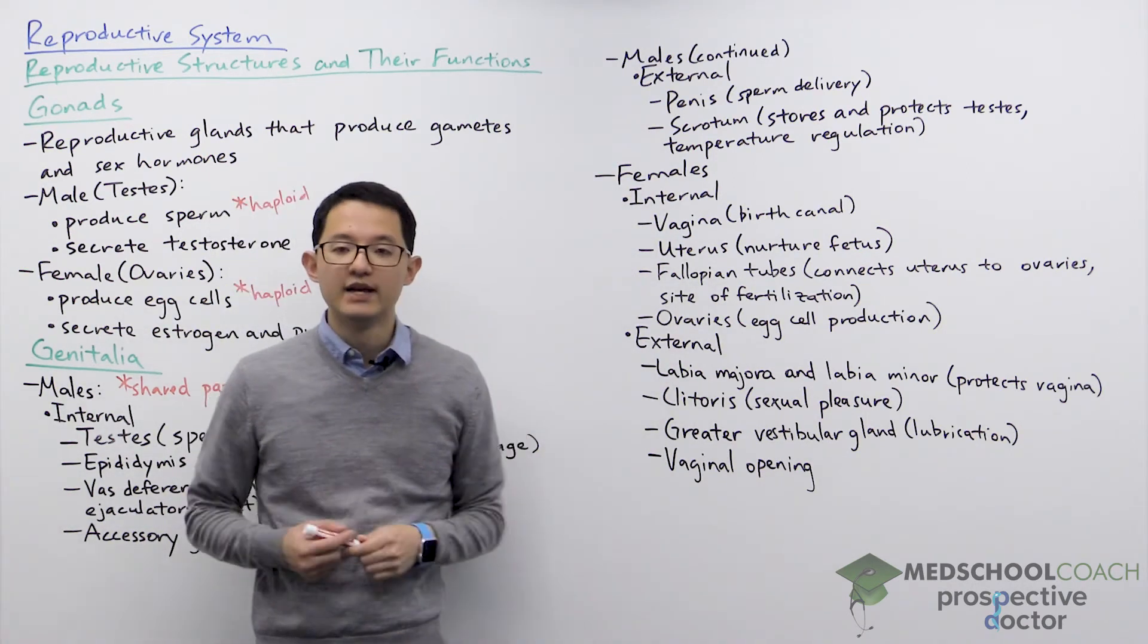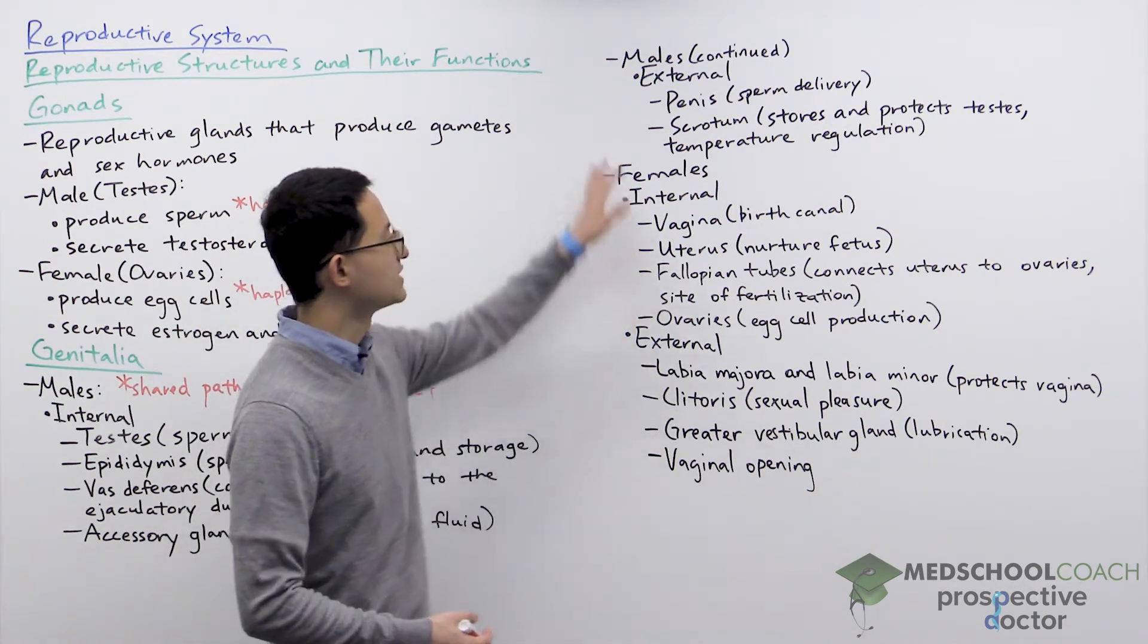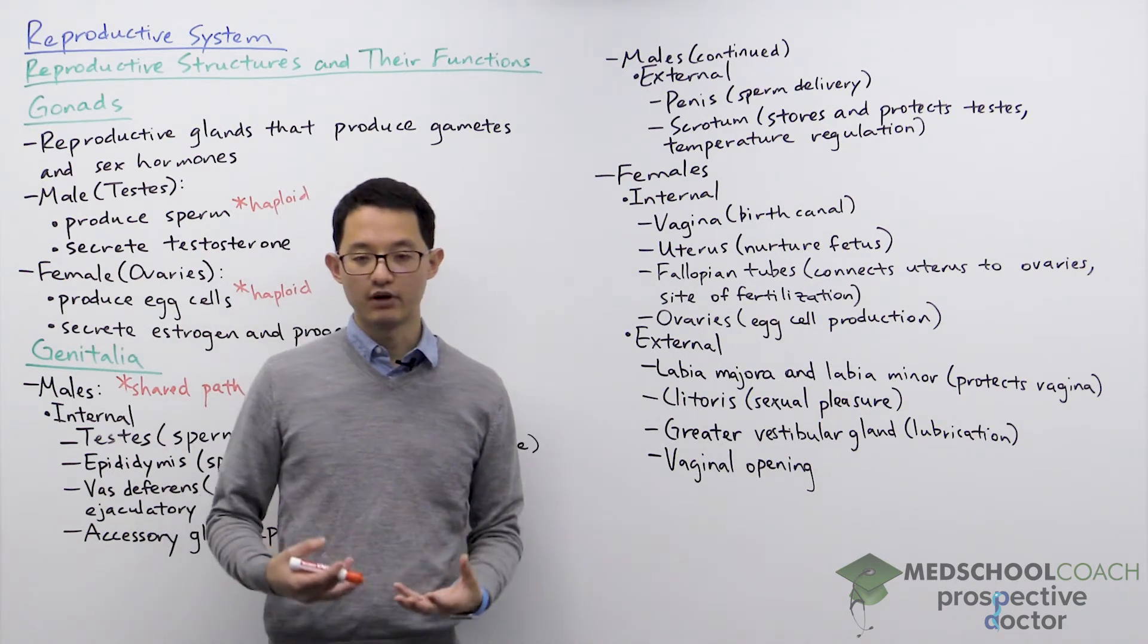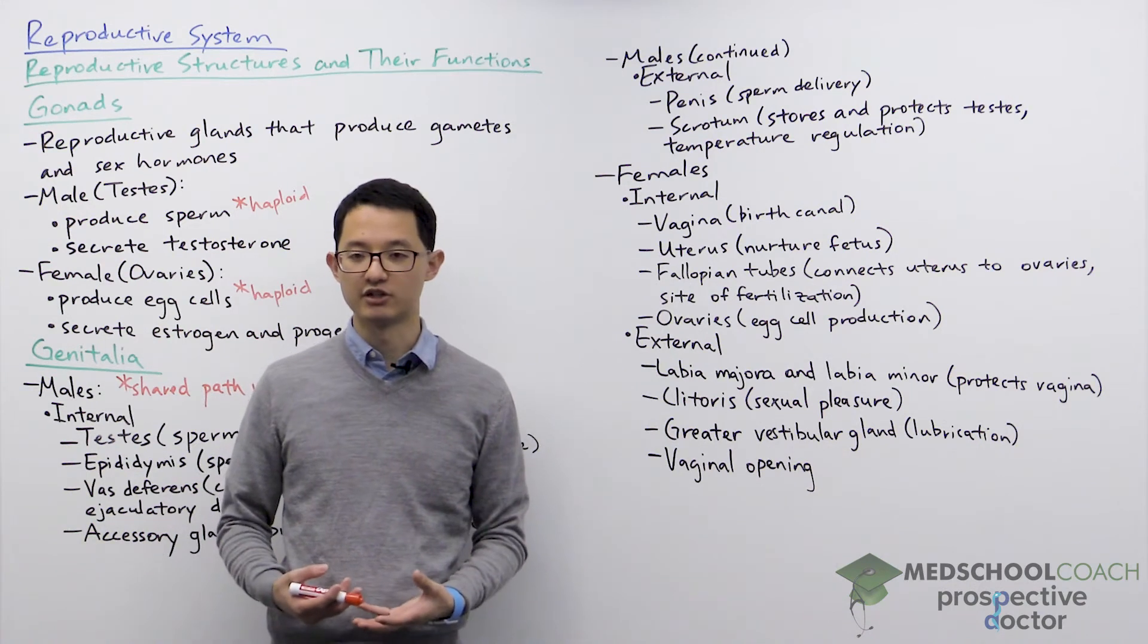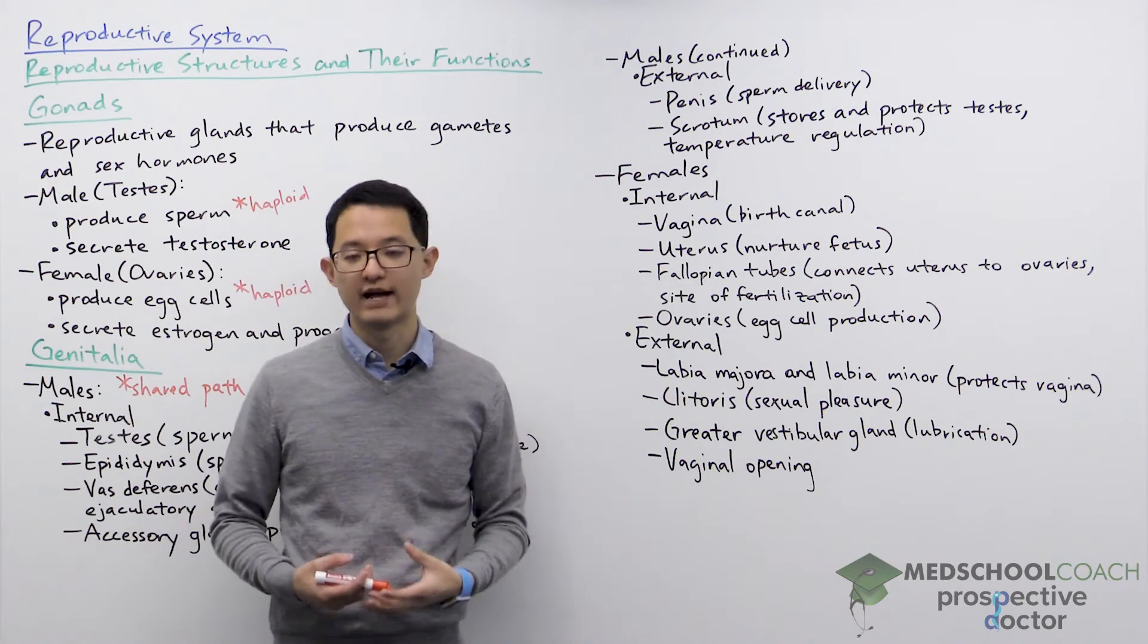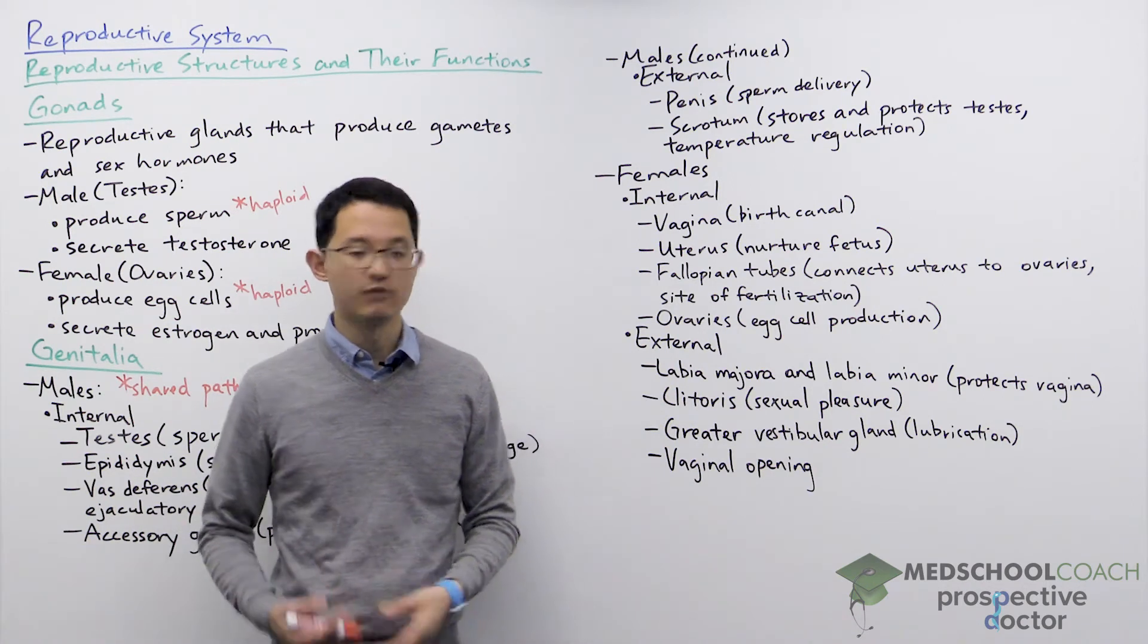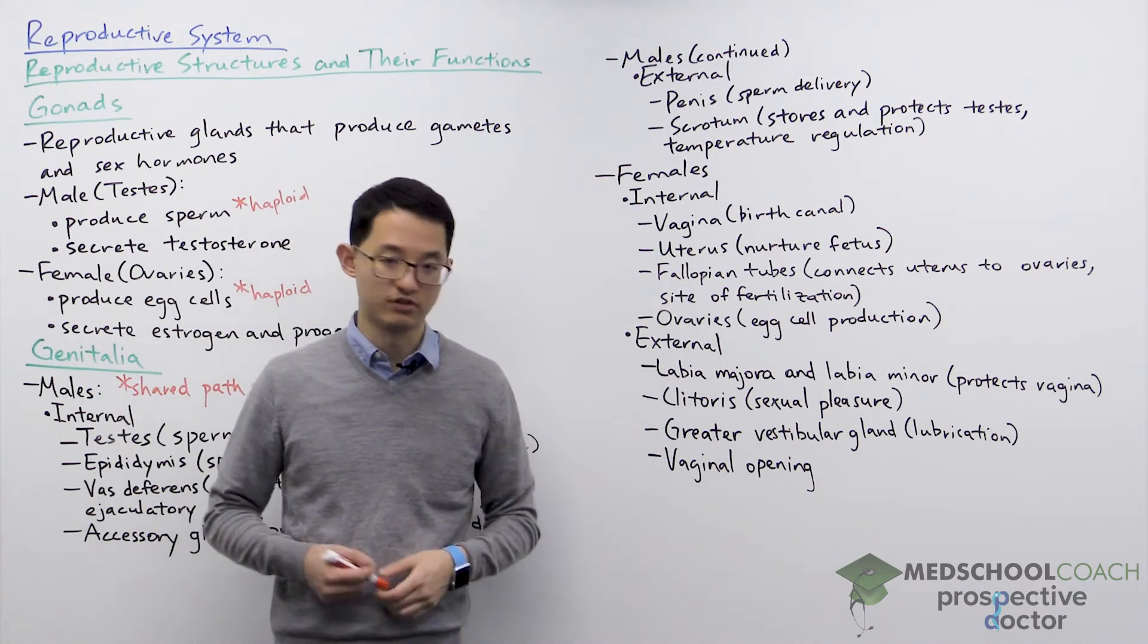The scrotum stores and protects the testes. It also has an important function in temperature regulation. As you might recall, the production of sperm has to occur at a temperature slightly lower than body temperature. When the body gets too hot the scrotum will actually relax and drop lower from the body, and when it is cold the scrotum will rise, bringing the testes closer to the body.